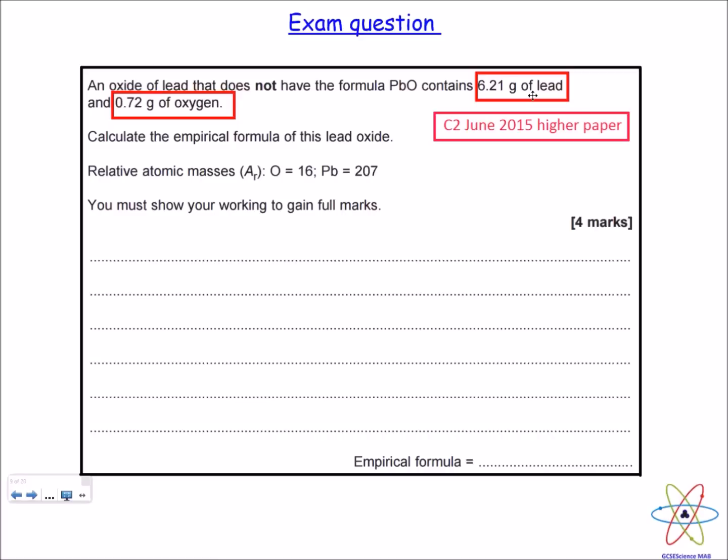The first thing I want to say is you will notice that the quantities of lead and oxygen are in grams. Sometimes you can get a question that has them in percentages, so for example you might have 75% lead and 25% oxygen, but don't worry because the method for working out empirical formula is the same in both cases.